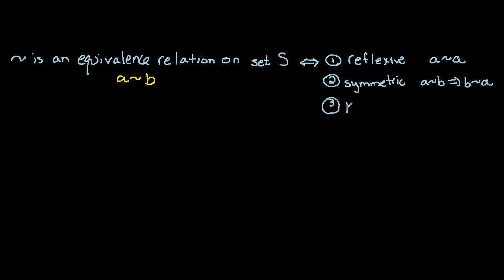And the last condition is transitivity. And this condition says that A twiddles B and B twiddles C implies that A twiddles C. So if those three conditions hold on a relation we have an equivalence relation.